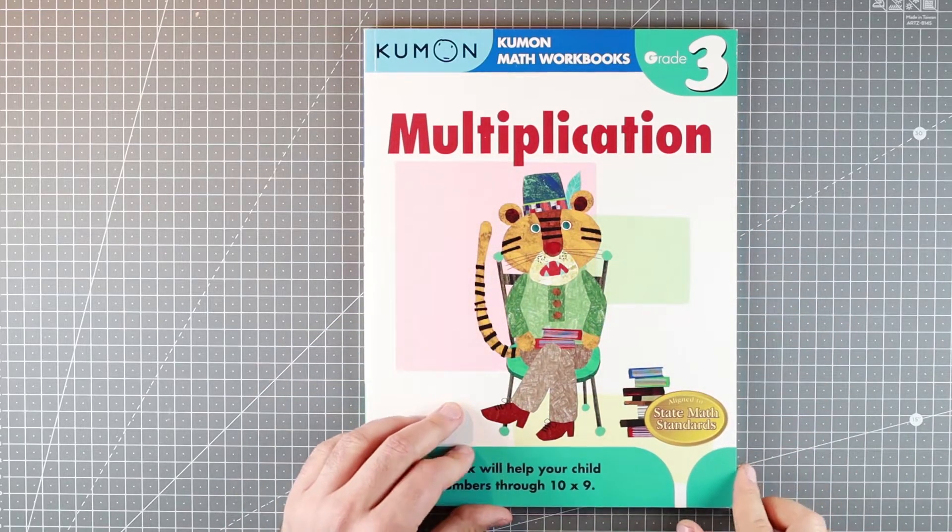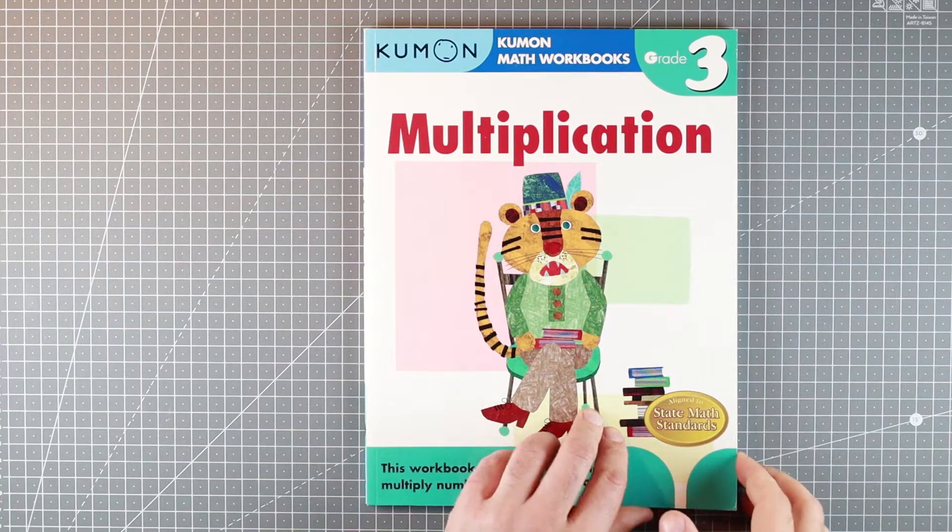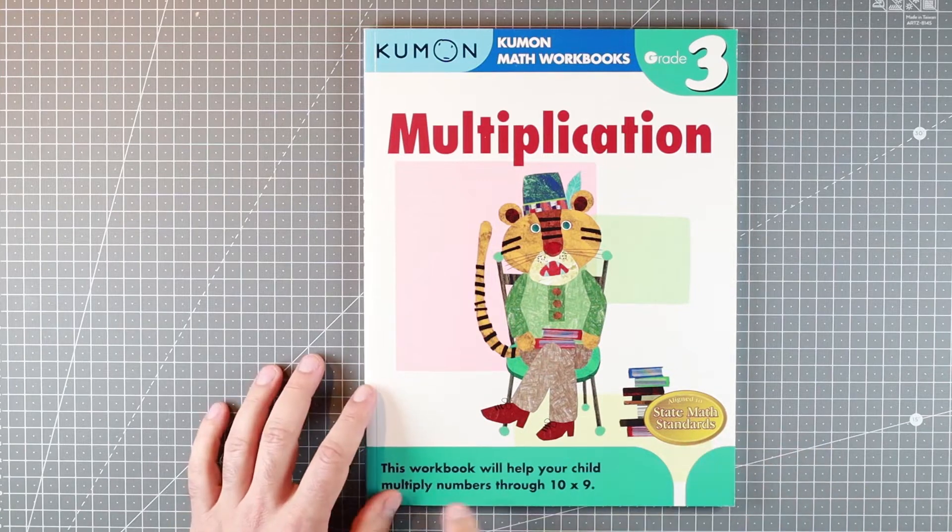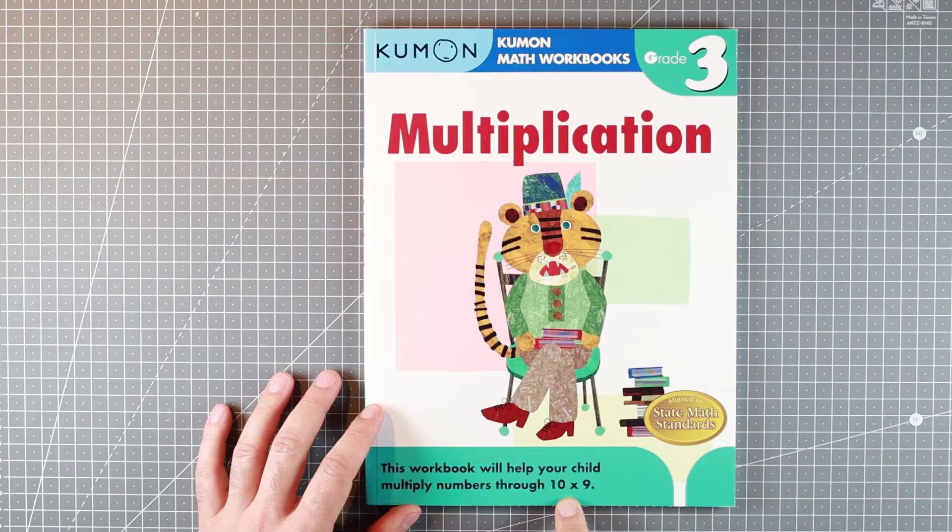Today we're looking at this technicolor jacket, green and black on the inside, 80-page multiplication book that will help your child to go through essentially small multiplication.